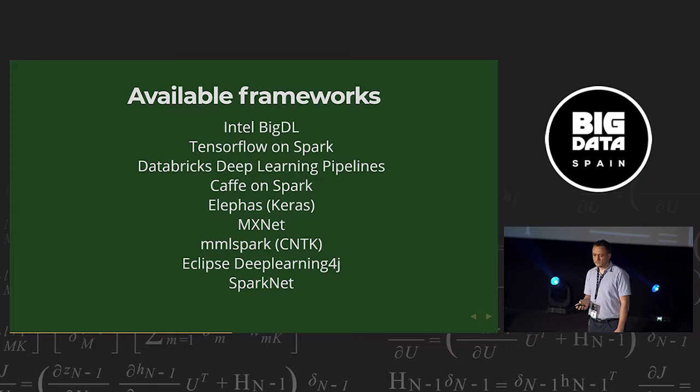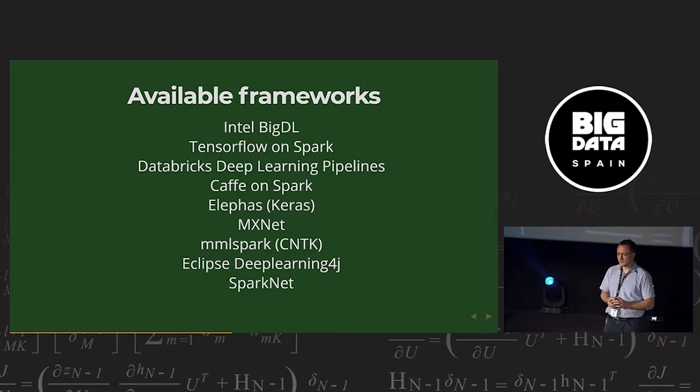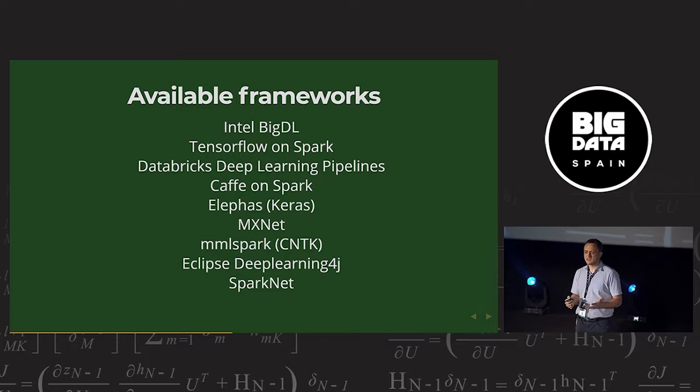And Sparknet from Berkeley, from Amplab. So you have lots of options for doing deep learning on Spark, and it's easy to see why, because Spark can be used as a general processing network, can be used to prepare data for deep learning, which is 80% of work, right? And then you can use some of these to actually train your deep learning network. So the choice why all these frameworks are appearing is kind of clear.